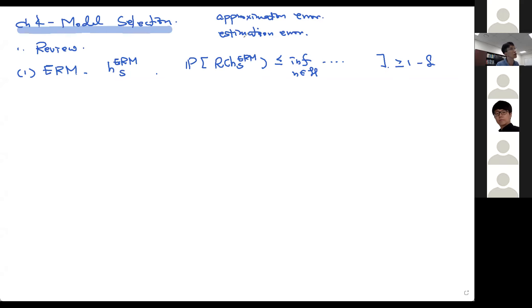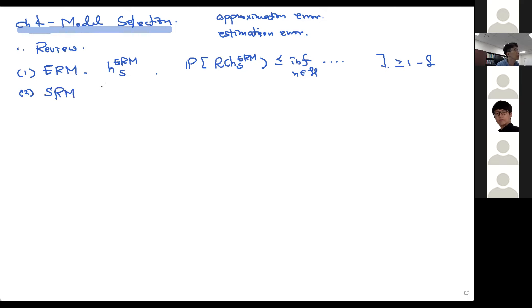ERM doesn't really perform well because it assumes very few structures on the hypothesis. So we looked at something called structural risk minimization, which imposes some structure on the hypothesis set.